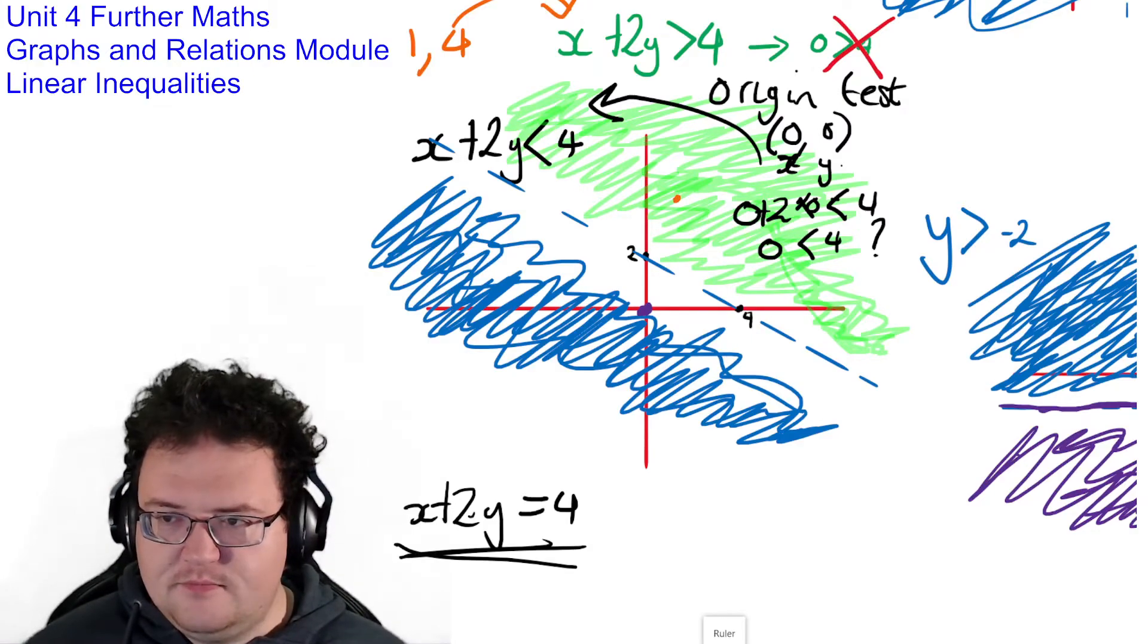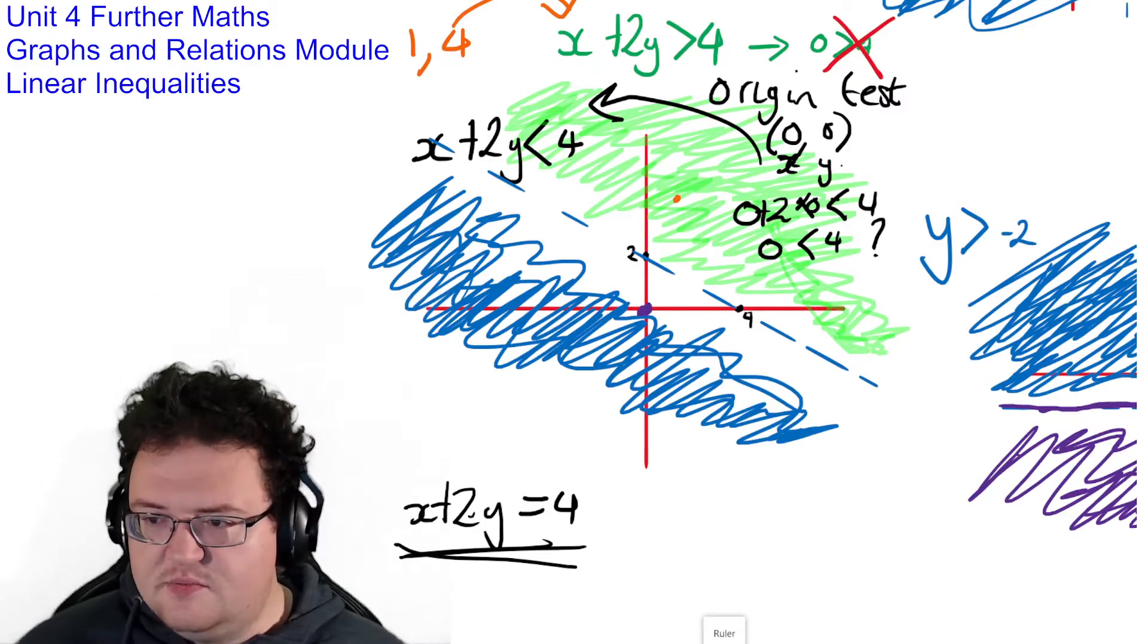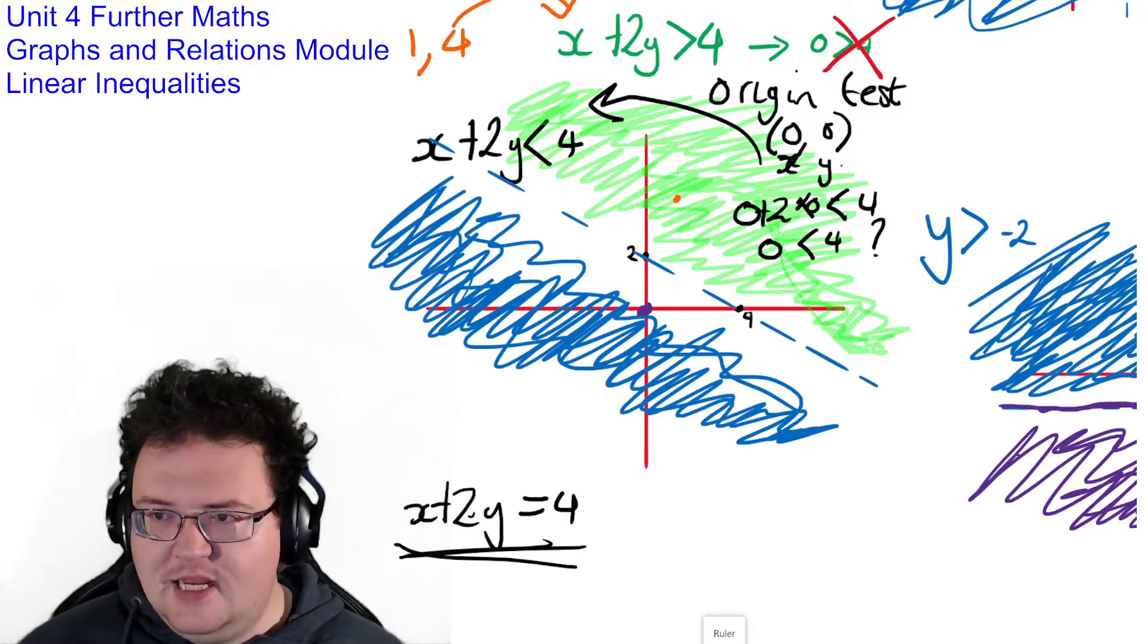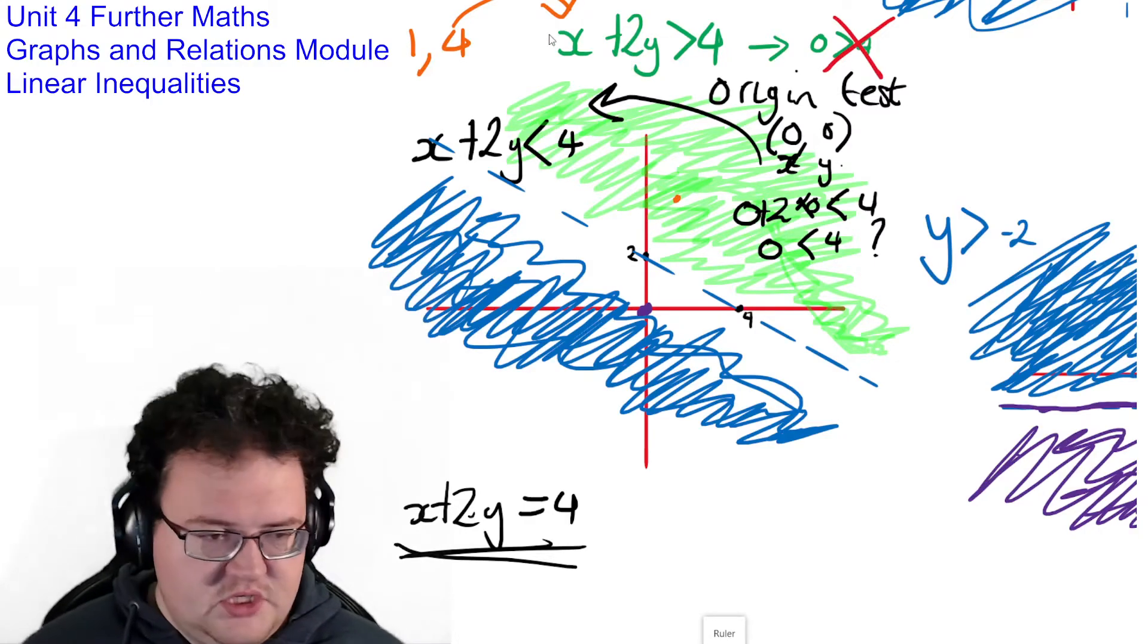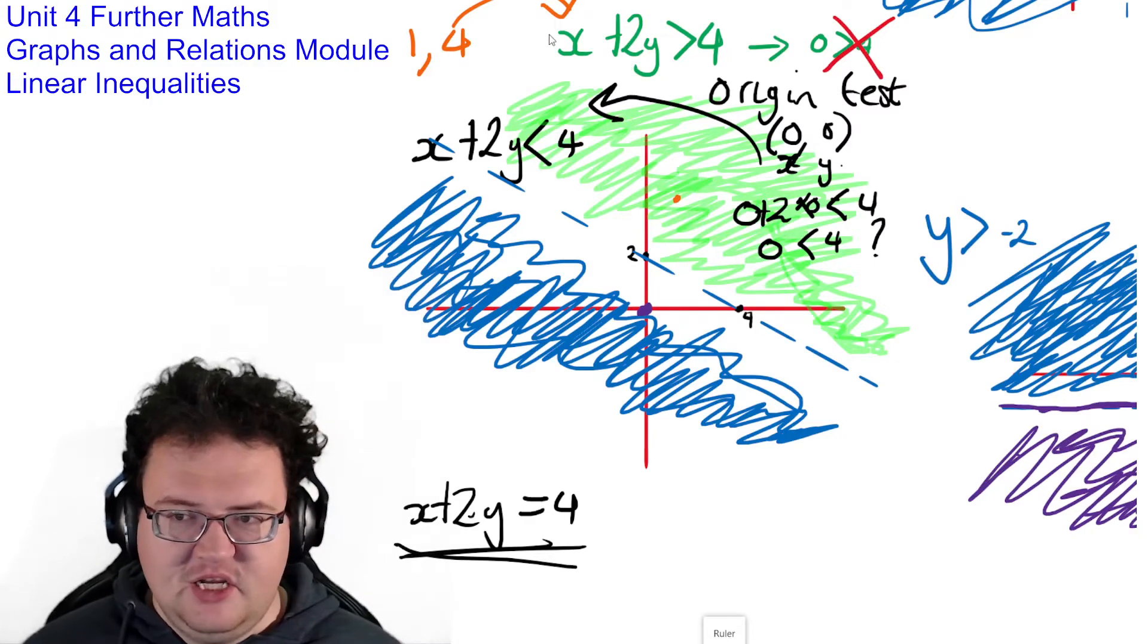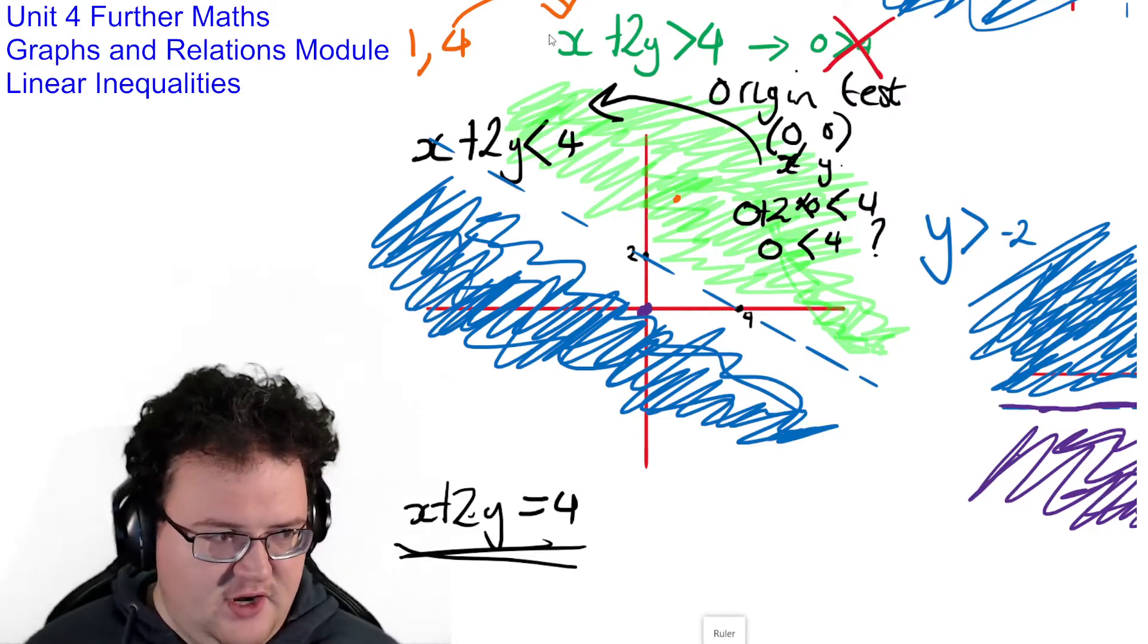But if I was to put negative 1, negative 2 into this statement, it would be false. Which means I would shade whichever side doesn't have negative 1, negative 2 in there.